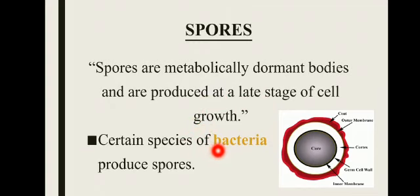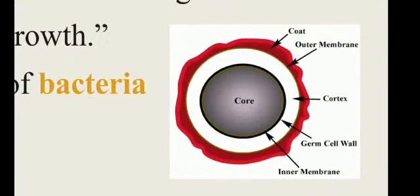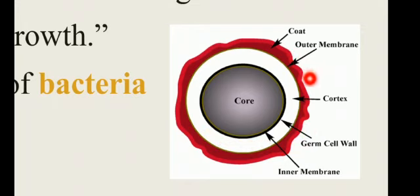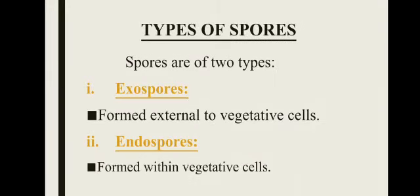ہر bacteria کے اندر spores نہیں بنتے، بلکہ کچھ مخصوص species میں بنتے ہیں۔ جن bacteria کو unfavorable conditions زیادہ face کرنی پڑتی ہیں ان میں spores زیادہ بنتے ہیں۔ Diagram میں spores کا پورا structure دکھایا گیا ہے۔ اس کے اوپر ایک coat بنی ہوتی ہے جو bacteria کو unfavorable conditions سے بچاتی ہے۔ اس میں outer coat، after membrane اور inner membrane ہوتی ہے۔